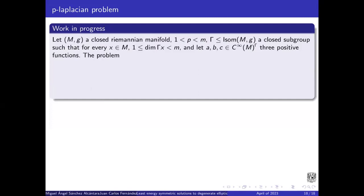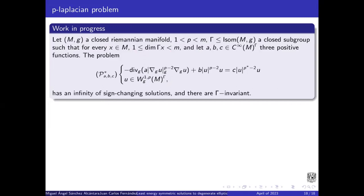And we have the work in progress. Let (M,g) be a closed Riemannian manifold, p on this interval, Gamma a closed subgroup of isometries, such that for every x in M, we have this condition on the Gamma orbit of x. The dimension of the Gamma orbit is bigger or equal to one and less than m. And let A, b, and c be three positive smooth functions that are Gamma invariant. So, this problem has an infinity of sign-changing solutions, and there are Gamma invariants.